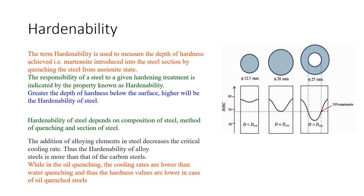The term hardenability is used to measure the depth of hardness achieved, i.e., martensite introduced into the steel section by quenching the steel from the austenite state. The susceptibility of steel to give hardening treatment is indicated by the property known as hardenability.